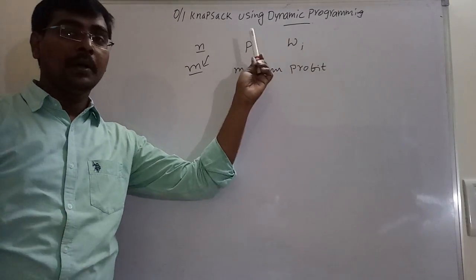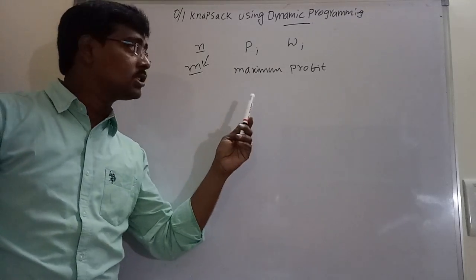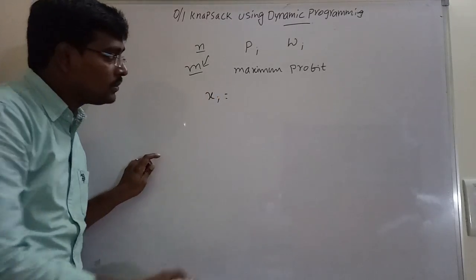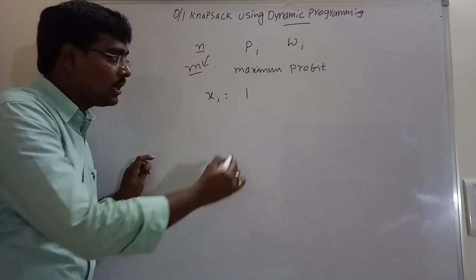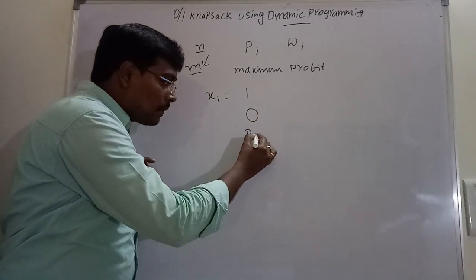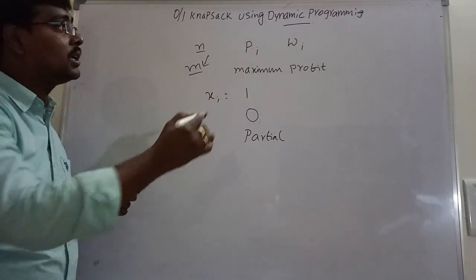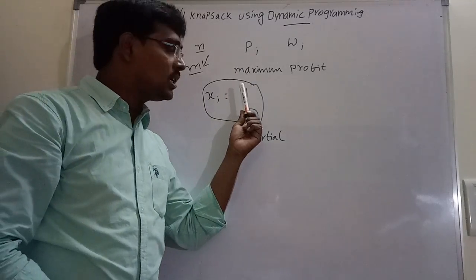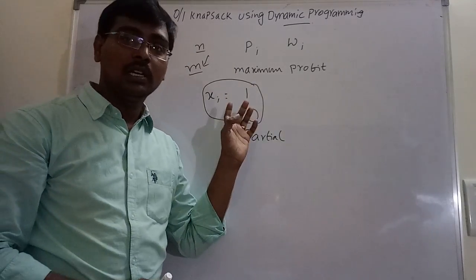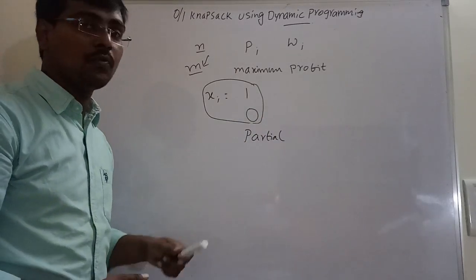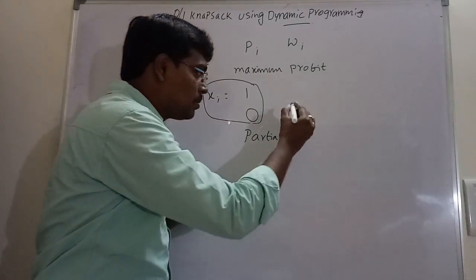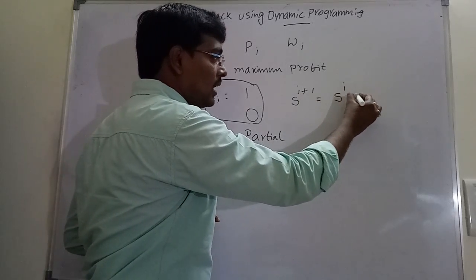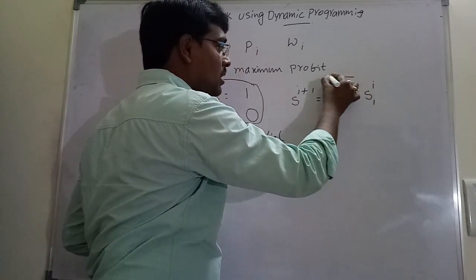In dynamic programming, compare it to the greedy method. In the greedy method we have 3 possible ways of placing an object into the knapsack — either the complete object is placed, the object is not placed, or a partial object is placed. But in dynamic programming, it considers only 2 cases: whether the complete object is placed into the knapsack, or the object is simply not placed. The formula is S^(i+1) = S^i ∪ S1^i.